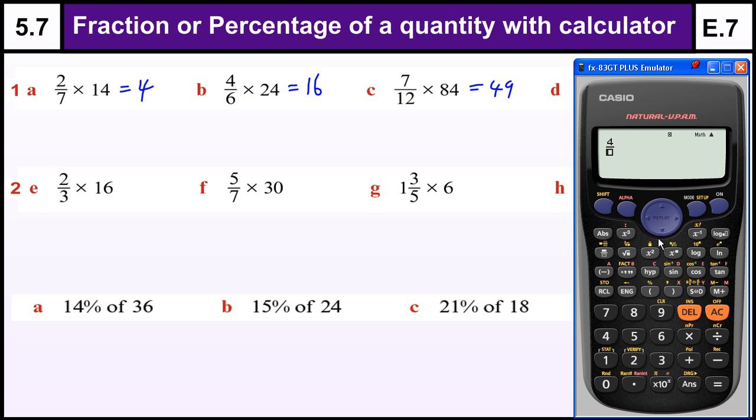4 over 6. Using the arrows to move around the fraction, make sure you come out of the fraction before you multiply. Gives us 16. And this one, 7 over 12 times 84 is 49.